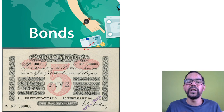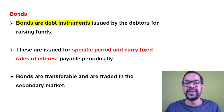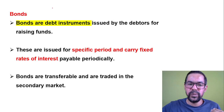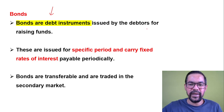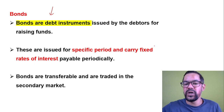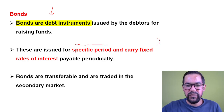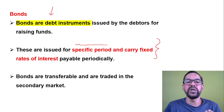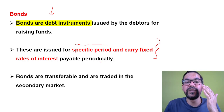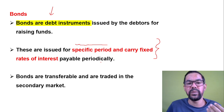Bonds are written documents through which borrowers generally raise funds for long-term duration — generally more than one year, and it can be up to 30 years. Bonds are debt instruments issued by debtors for raising funds for a specific time period, and they carry a fixed rate of interest payable periodically. As an investor, if you invest in bonds you will get a fixed rate of interest over the maturity period of that instrument.